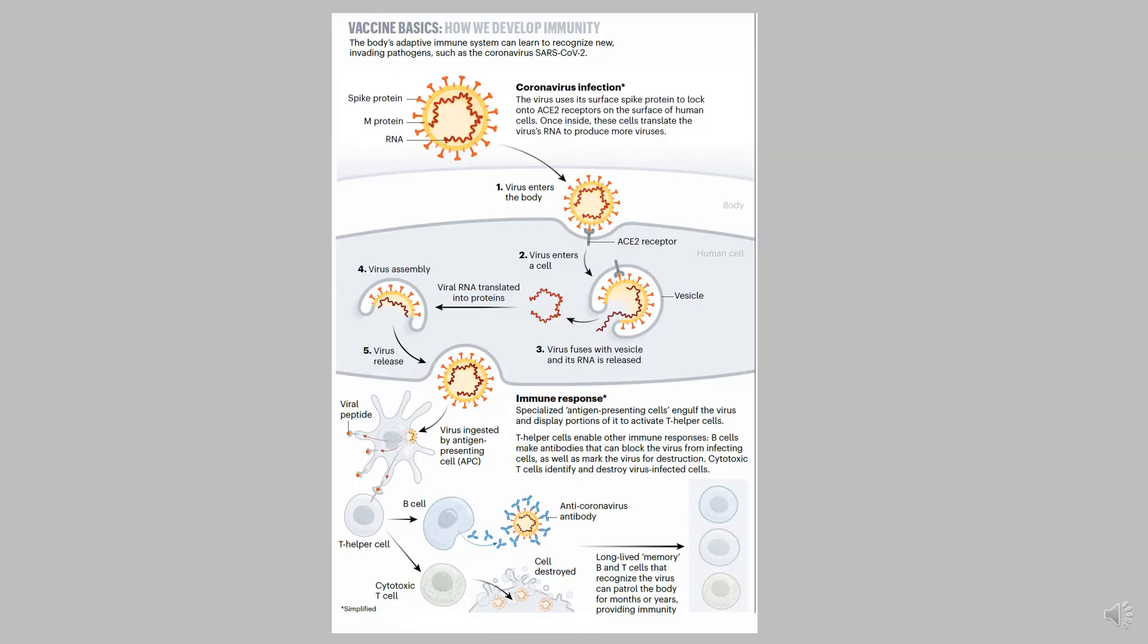So this is a recap on how we develop immunity. I've talked about this multiple times, but one more time, the body's adaptive immune system can learn to recognize new invading pathogens.